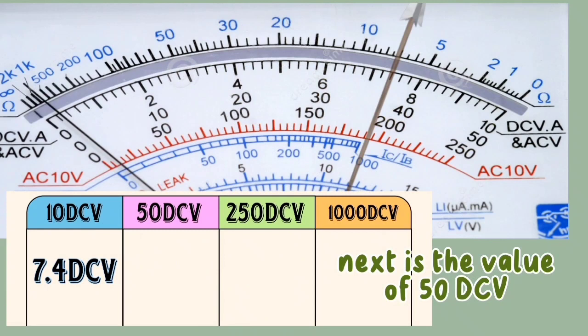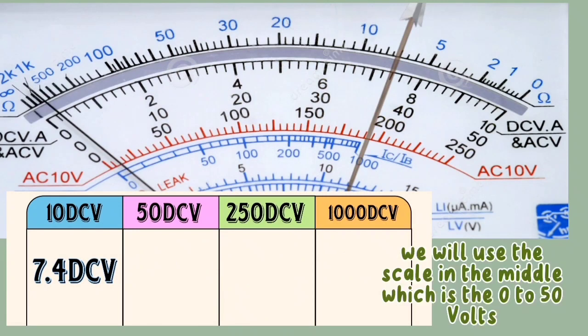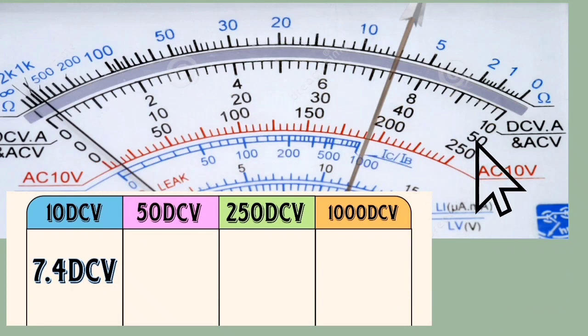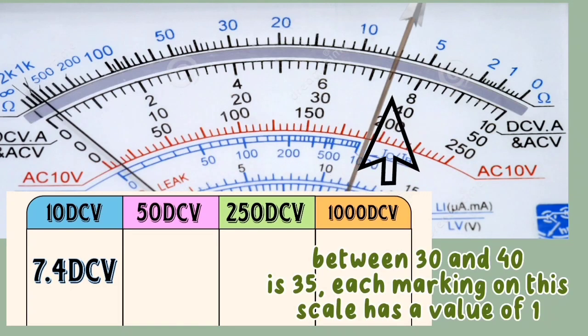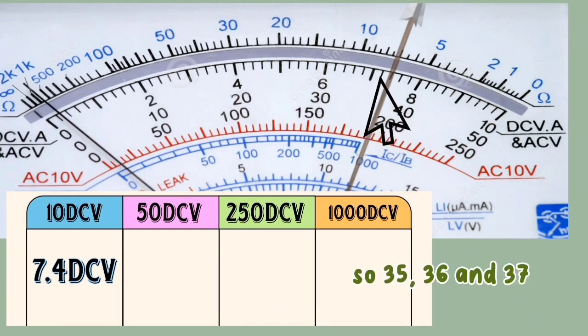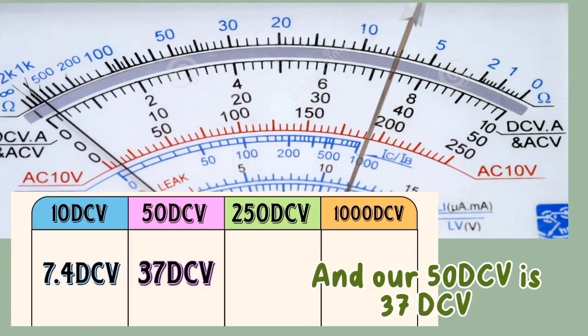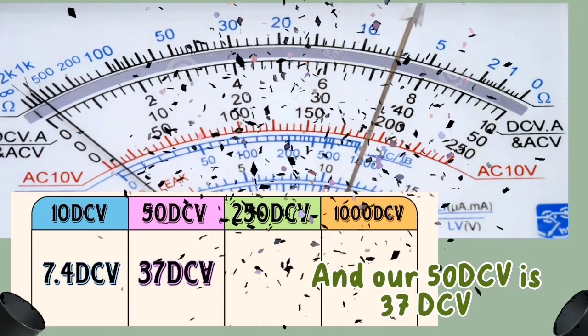Next is the value of 50 DCV. We will use the scale in the middle, which is 0 to 250: 30, 36, and 37. Our 50 DCV is 37 DCV.